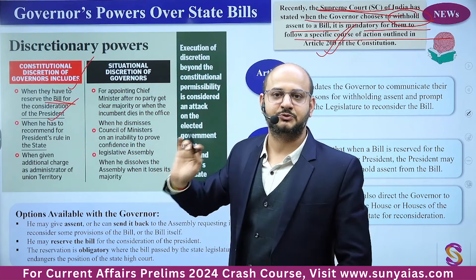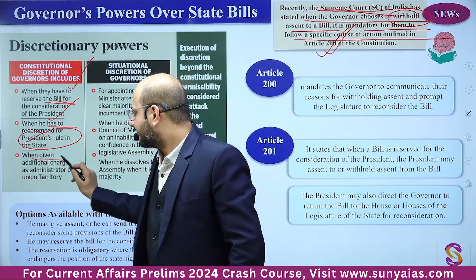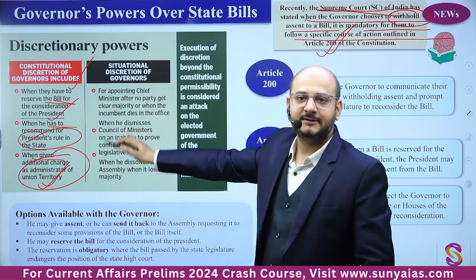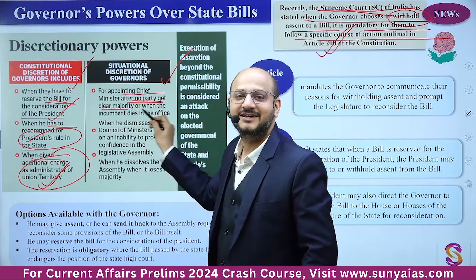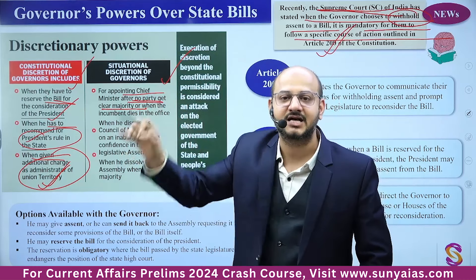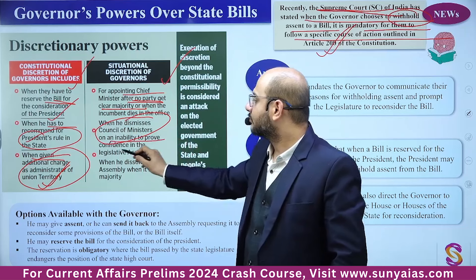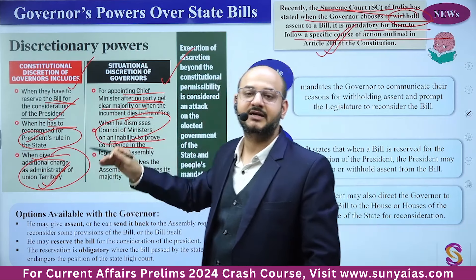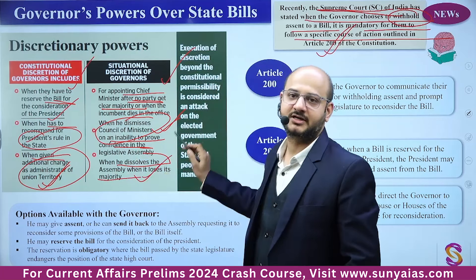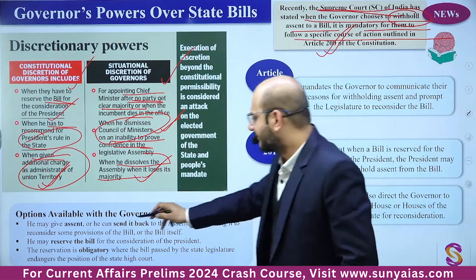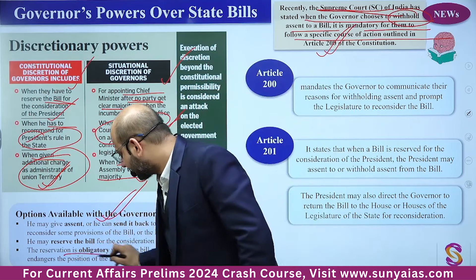Constitutional discretionary powers of the Governor include: reserving a bill for the President's consideration, recommending President's Rule in a state, and giving additional charge as administrator of a Union Territory. Situational discretionary powers include: appointing the Chief Minister after no party gets a clear majority, dismissing the council of ministers on inability to prove confidence, and dissolving the assembly when it loses majority.